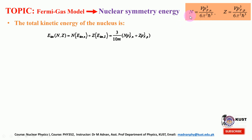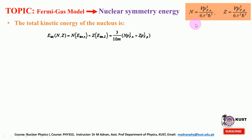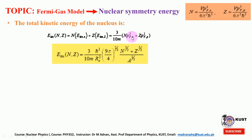We can obtain these numbers from the density of states — the number of available states within a spherical volume V — where this is the Fermi momentum for the neutron and that is for the proton. In order to evaluate the total kinetic energy, we need to substitute N and Z so that we can obtain the total kinetic energy of the nucleus in terms of the neutron and proton numbers.